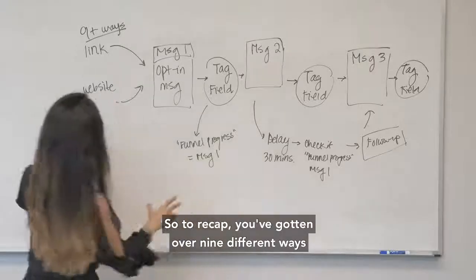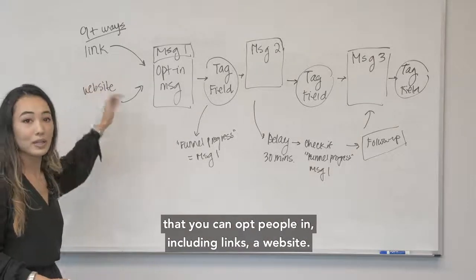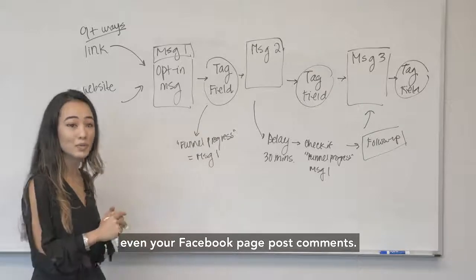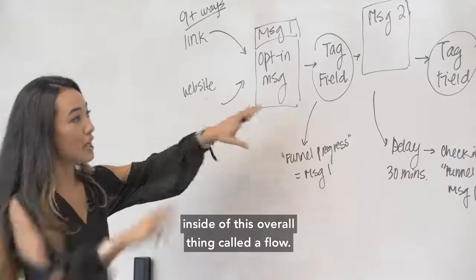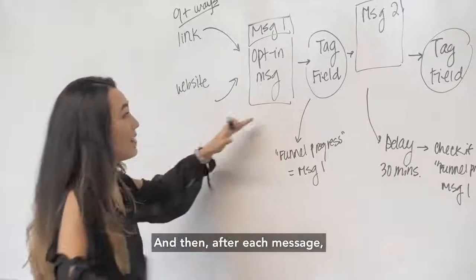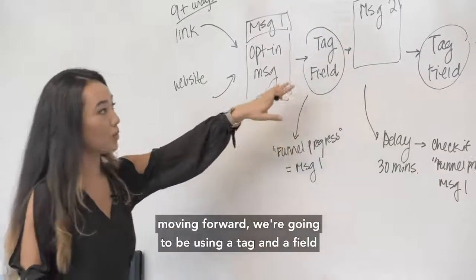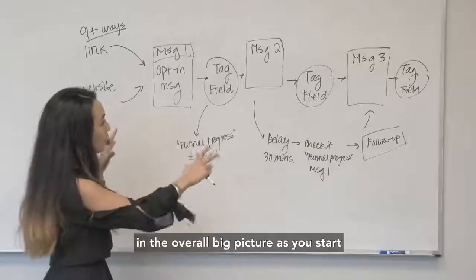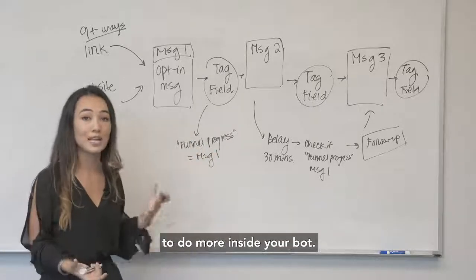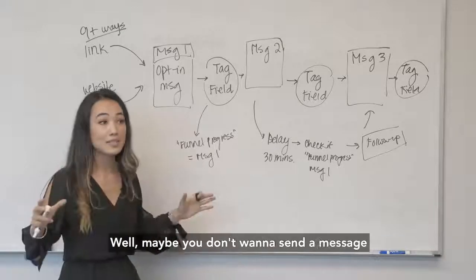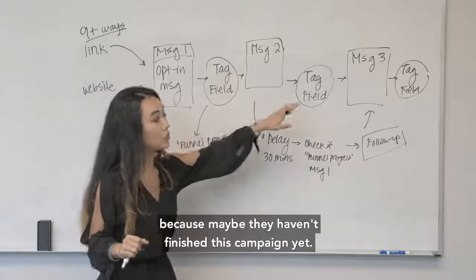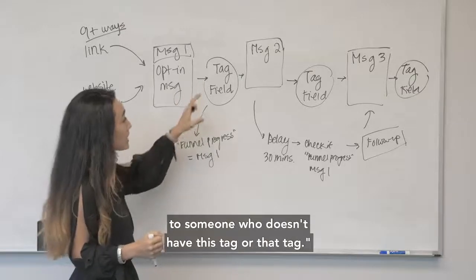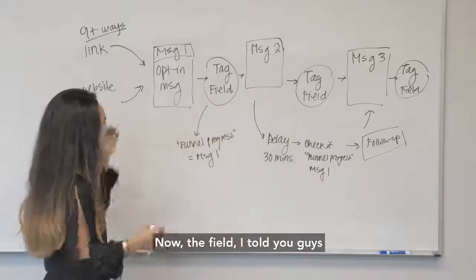To recap, you've got over nine different ways that you can opt people in including links, a website, someone could message your Facebook page, you can bring people in from a Facebook ad, even your Facebook page post comments. From there we're going to send them to an opt-in message inside of this overall thing called a flow. Then after each message moving forward we're going to be using a tag and the field to track where they are in the campaign at any given point. This is also important for the overall big picture as you start to do more inside your bot—maybe you want to send out a message to your whole list, well maybe you don't want to send a message to someone who's in message two or three because maybe they haven't finished this campaign yet. You can easily do that by tracking to know I'm only going to send a message to someone who doesn't have this tag or that tag.